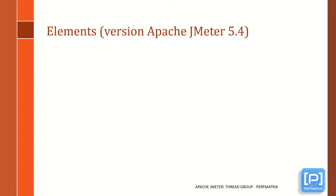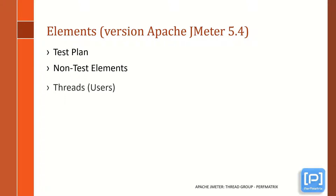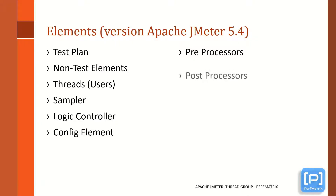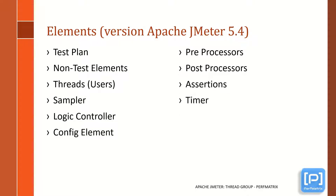Here you can see the list of elements that Apache JMeter 5.4 has. There is a total of 12 elements: test plan, non-test elements, threads, sampler, logic controller, config element, preprocessor, post processor, assertions, timer, listener, and test fragment.